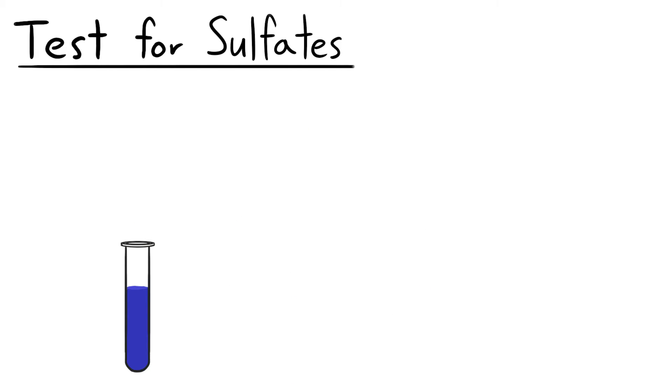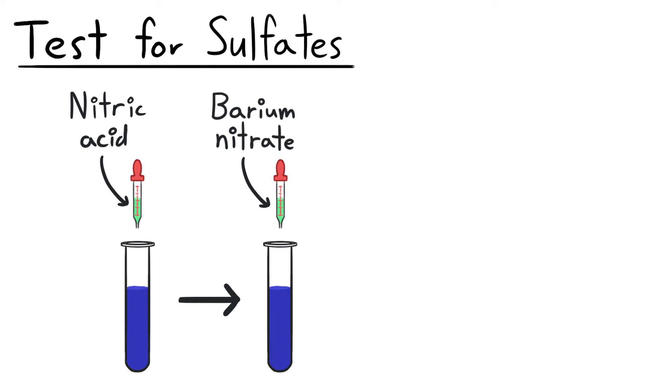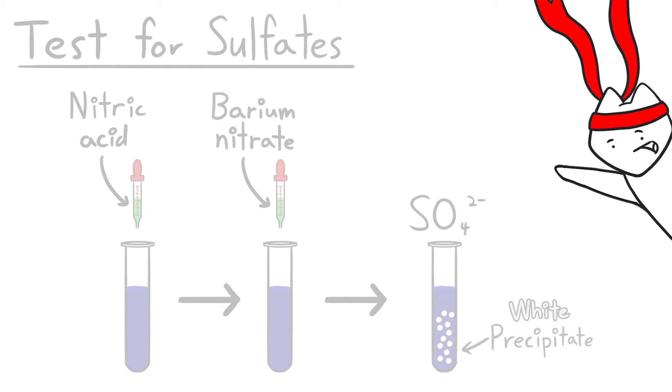To test for sulfates, we add nitric acid and barium nitrate. When the testing chemicals are added, white precipitate will be observed, proving that sulfate is present. Do note that in exams, the keyword barium usually hints at the involvement of sulfate ions.